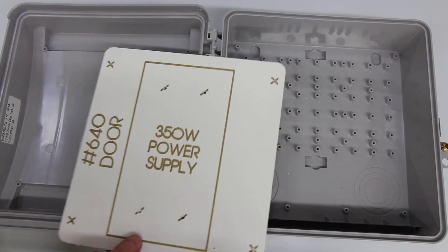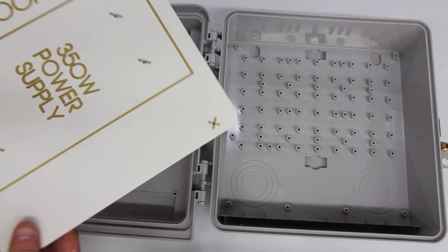This video shows how to use the item number 640 door mounting kit for the CG1500.